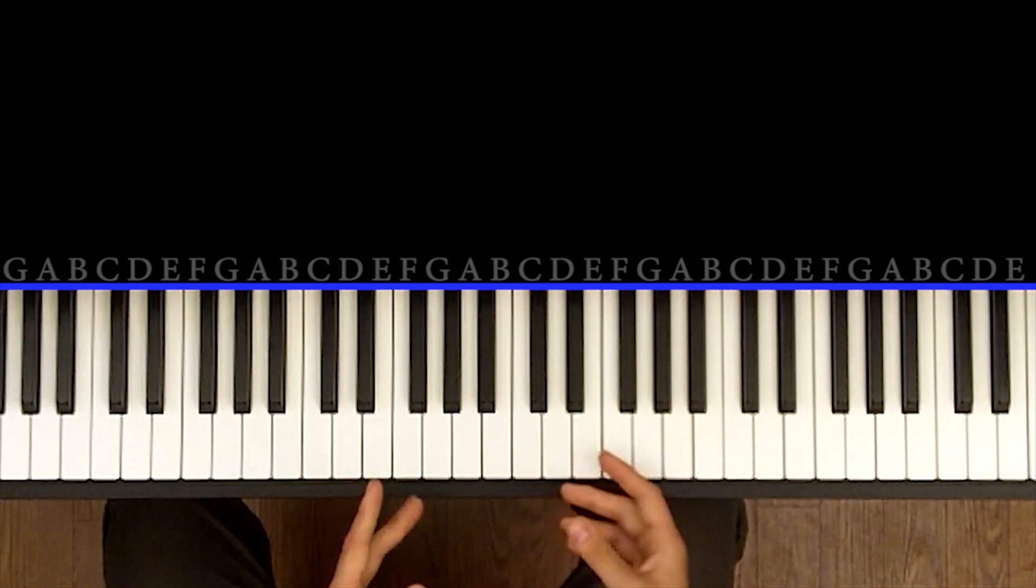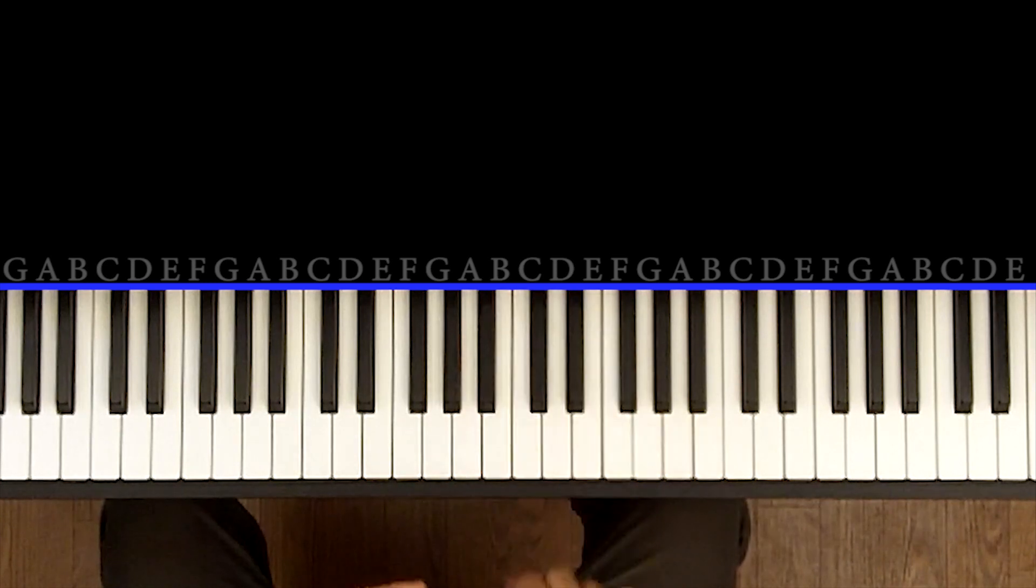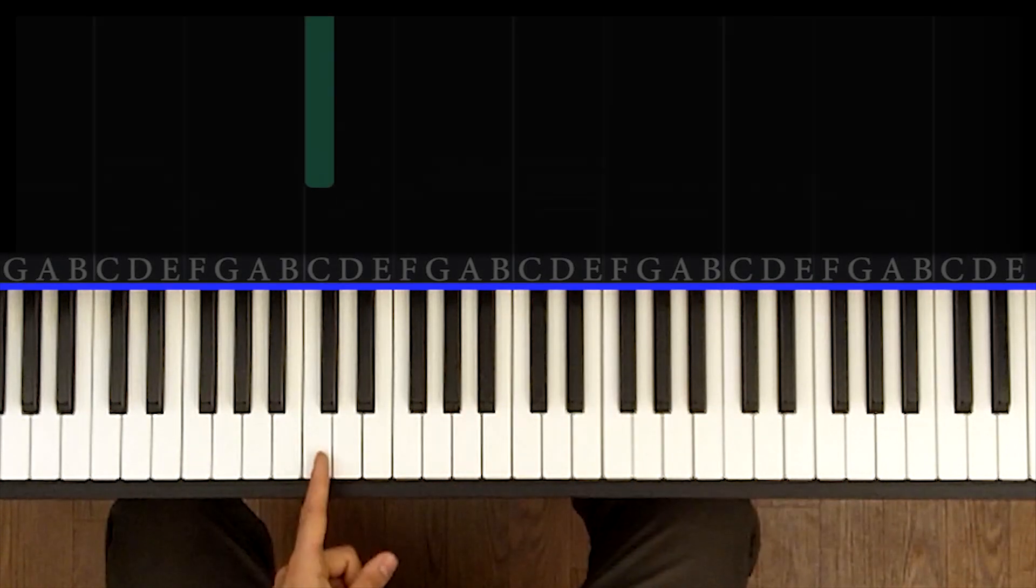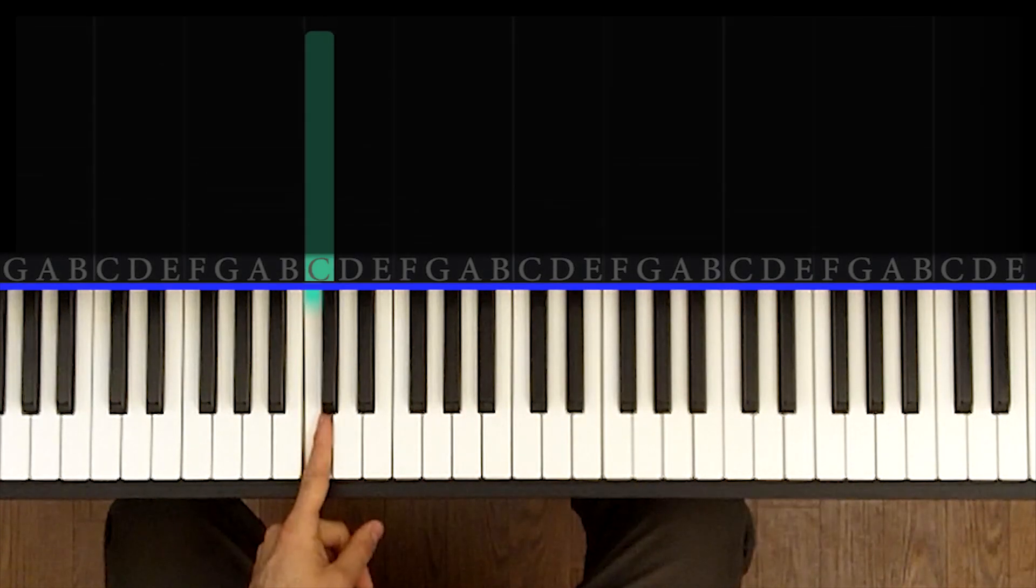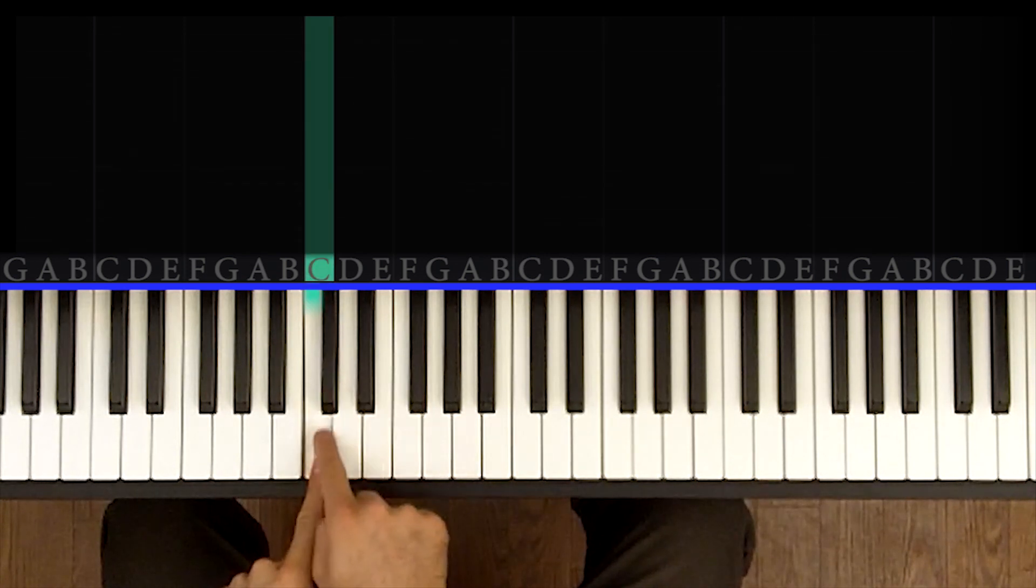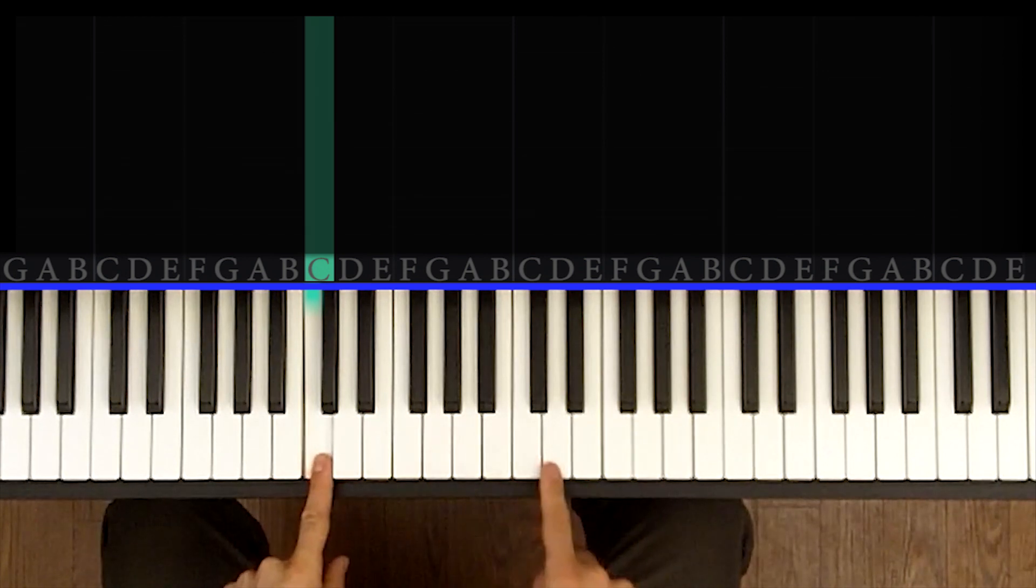We're going to start by talking about the major scale. And the easiest way to start talking about the major scale is to look at a C, find a C on your piano. You can actually do this with me. Find a C, so that's a white note that's just to the left of a group of two black notes. And you're going to go up all white notes until you get to the next C, so like this.